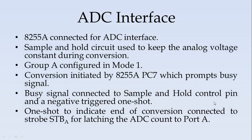Now we will get into the details of the Analog to Digital Converter interface. As we have seen, 8255A is connected for ADC interface. A sample and hold circuit is used to keep the analog voltage constant during conversion. The analog voltage is converted into a digital equivalent count in the process of ADC. During the process of conversion, the analog voltage needs to be constant — for that purpose the sample and hold circuit is used. The Group A, consisting of Port A and Port C upper, are configured in mode 1, which uses handshaking signals.